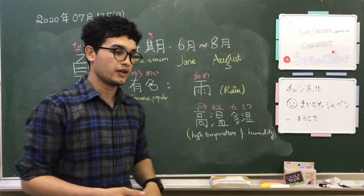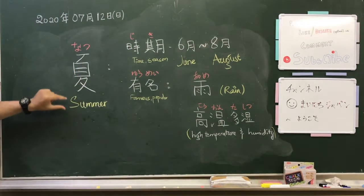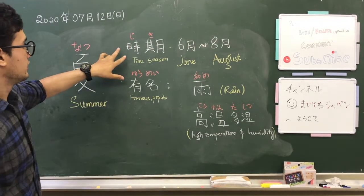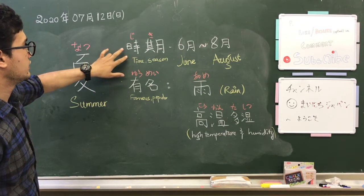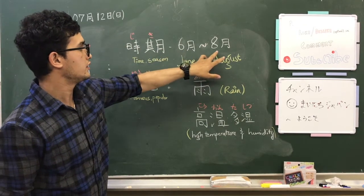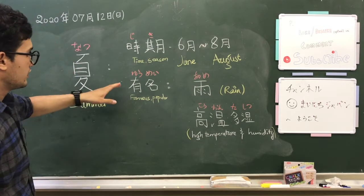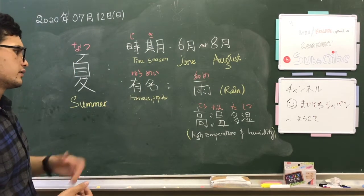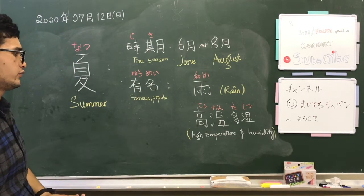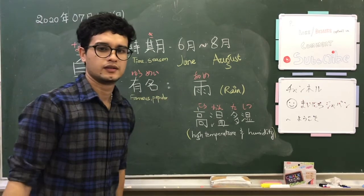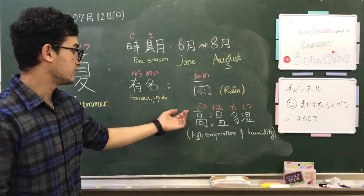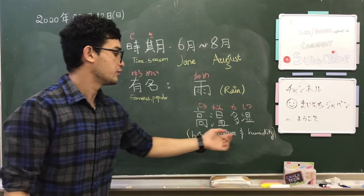Next we have Natsu, which is summer. We talked about this before also. It starts in June and ends in August.